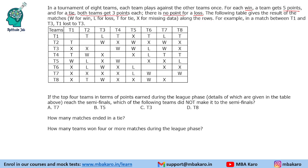We need to read the information along the rows. For example, in a match between T1 and T3, T1 lost to T3. So T1 versus T3 — T1 is the loser. Similarly, for T2 versus T3, T2 is the winner. The result is given along the rows.